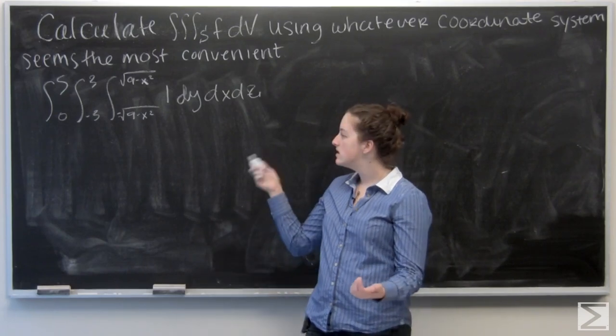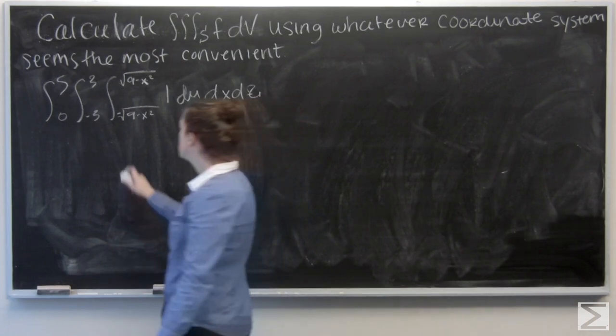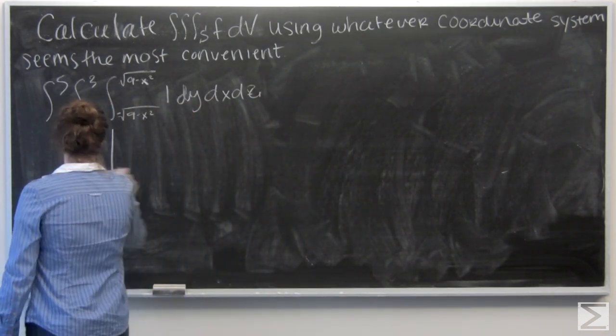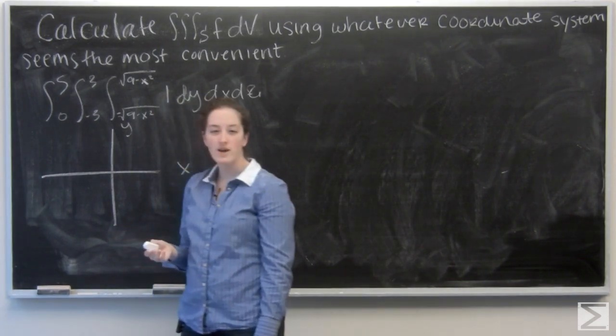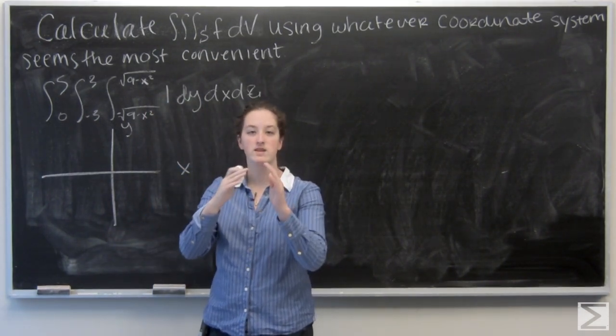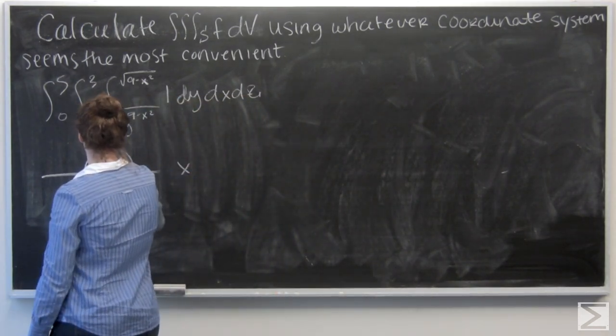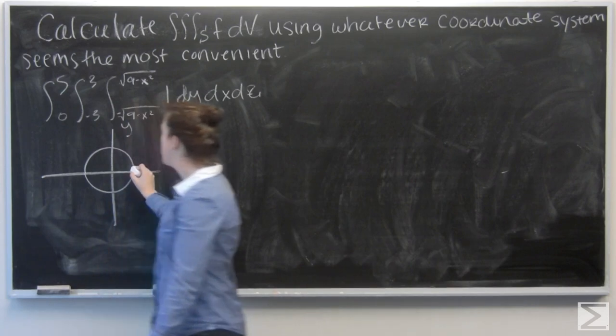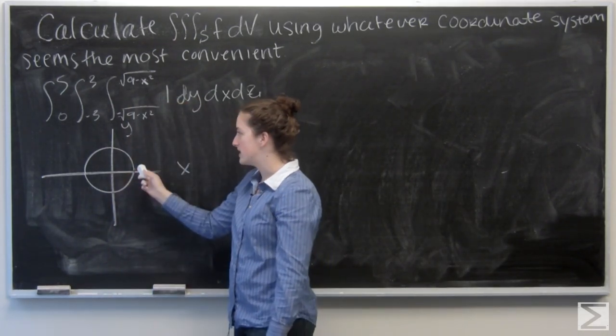So I'm going to project these boundaries into the x, y plane so I can get a better picture of what's going on. The square root of nine minus x squared makes a half circle with radius three in the positive y direction, and then the negative square root of nine minus x squared makes the other half of that circle. So I know I have some sort of tube that's coming up.